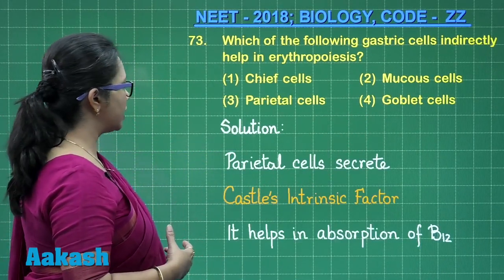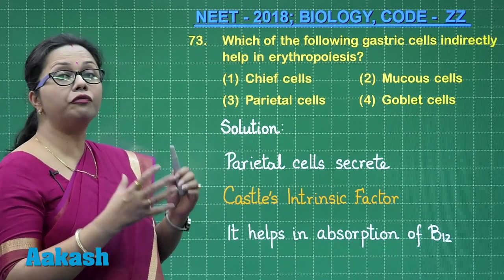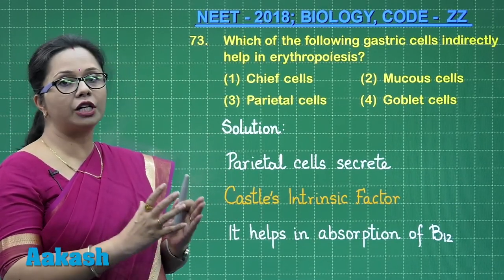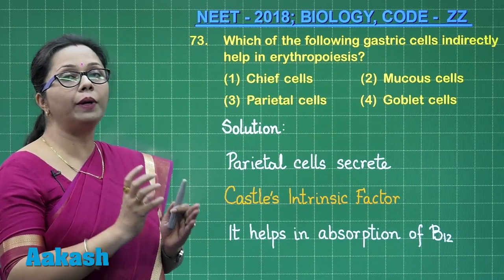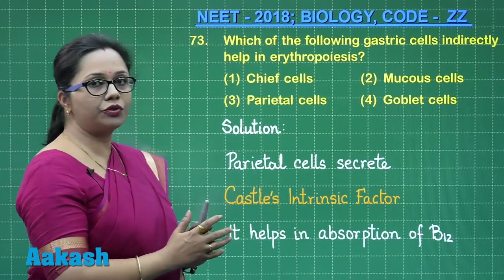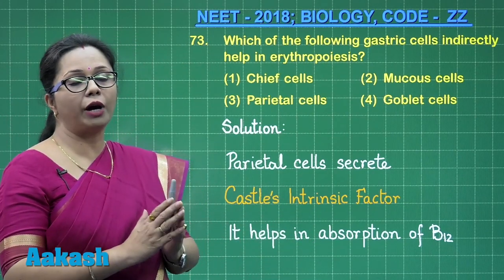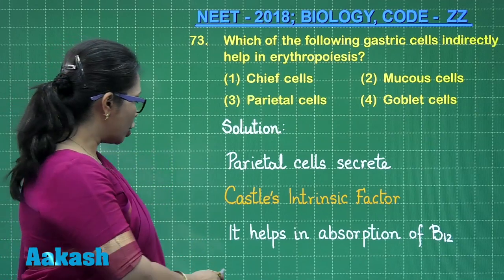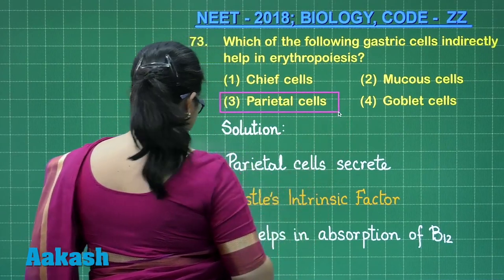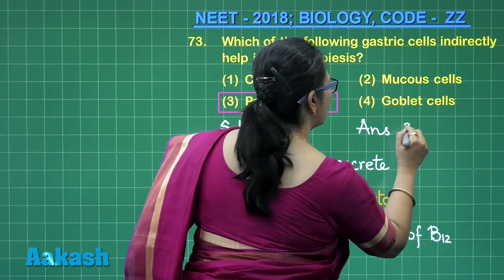The parietal cells, also called oxyntic cells, secrete Castle's intrinsic factor, which is a glycoprotein. This glycoprotein binds with vitamin B12 taken in the diet, and that complex is then absorbed. Even if B12 is present in the diet, without Castle's intrinsic factor it would not be absorbed. B12 is necessary for DNA maturation during erythropoiesis. So the answer is option 3 — parietal or oxyntic cells.